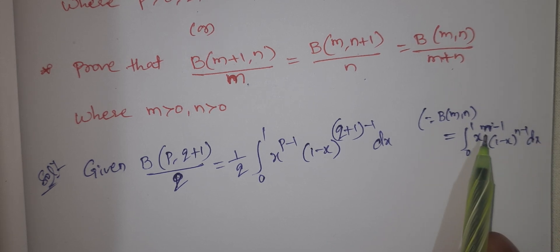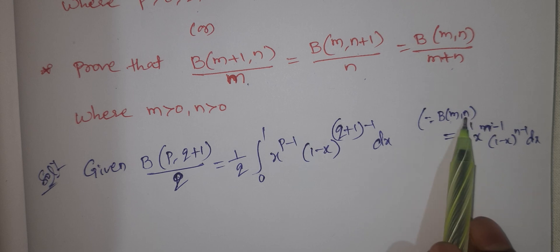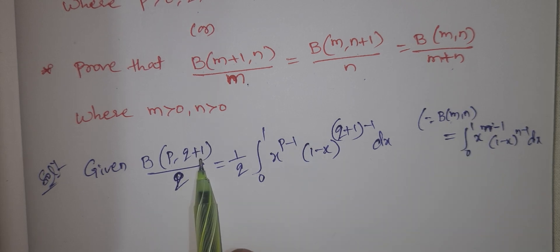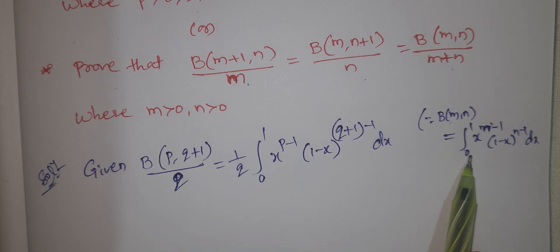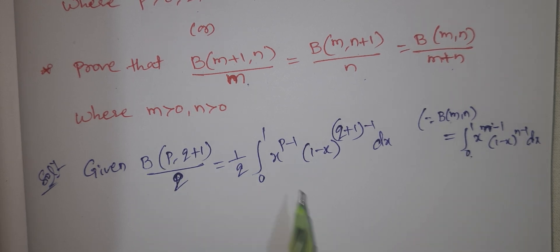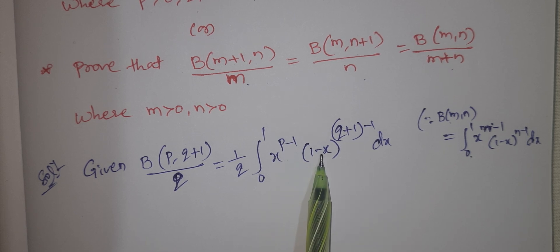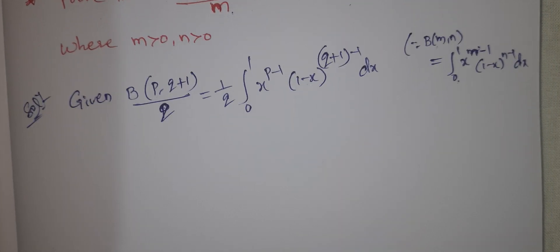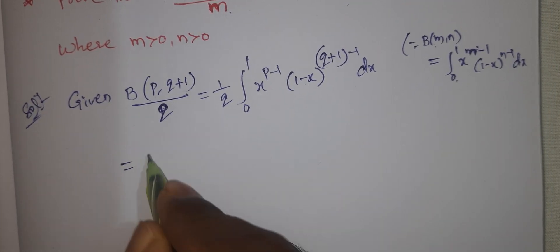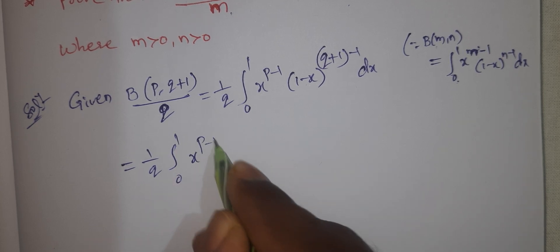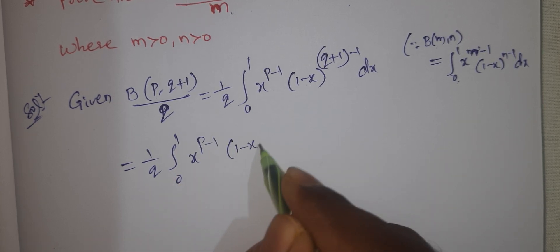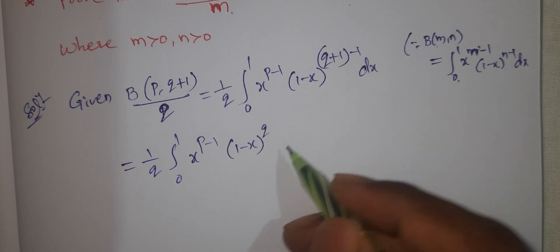Here, m corresponds to p and n corresponds to q plus 1. So 1 by q is equal to beta of m, n by the definition formula. So 1 by q times the integral from 0 to 1 of x to the power of p minus 1 times 1 minus x to the power of q — that is q plus 1 minus 1.